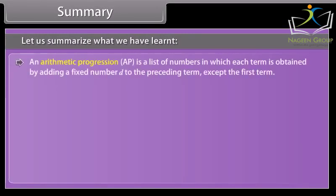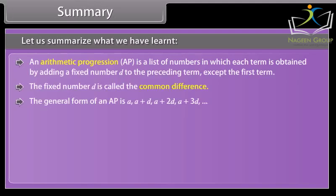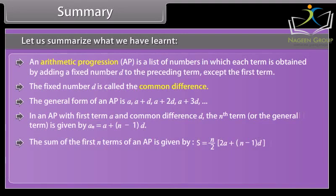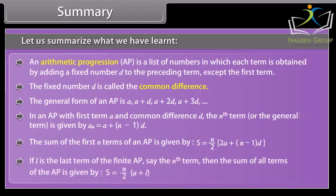Summary. An arithmetic progression (AP) is a list of numbers in which each term is obtained by adding a fixed number D to the preceding term, except the first term. The fixed number D is called the common difference. The general form of an AP is a, a + d, a + 2d, a + 3d, and so on. The nth term is given by an = a + (n minus 1) into D. The sum of first n terms is S = n/2 into (2a + (n minus 1) into D). If L is the last term, then S = n/2 into (A + L).